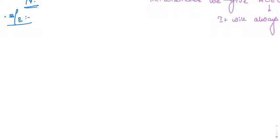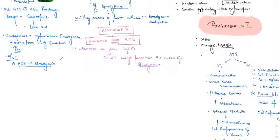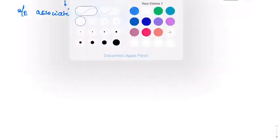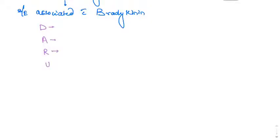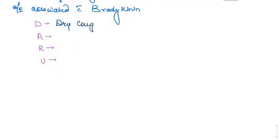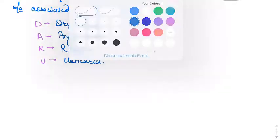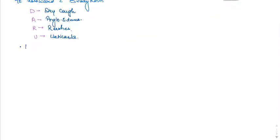The side effects of ACE inhibitors are related to bradykinin potentiation, as discussed earlier. The bradykinin-related side effects can be remembered by the mnemonic D-D-A, angioedema, R-R-R, and U. These are all associated with bradykinin action potentiation.